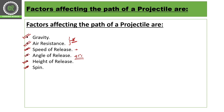The barrel has lands and grooves, which we call rifling. The rifling gives a spinning effect to the bullet. The reason for this spinning effect is that it allows the bullet to travel longer distances. These lands and grooves in the barrel impart the spinning effect to the bullet.